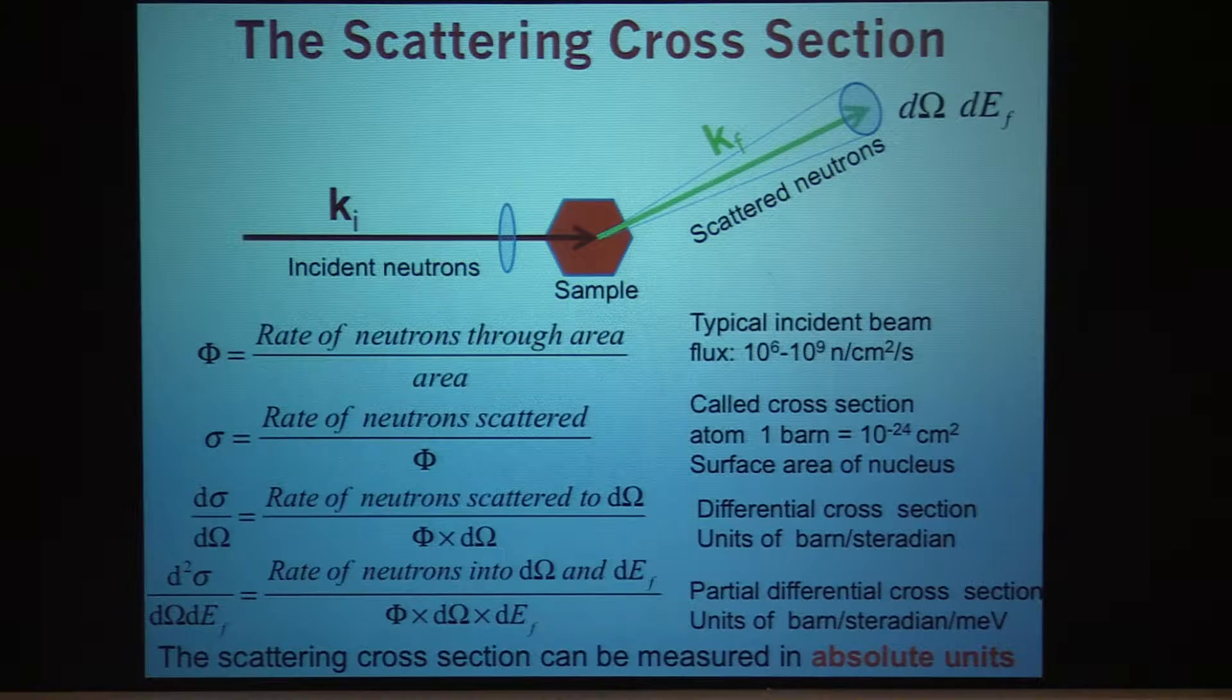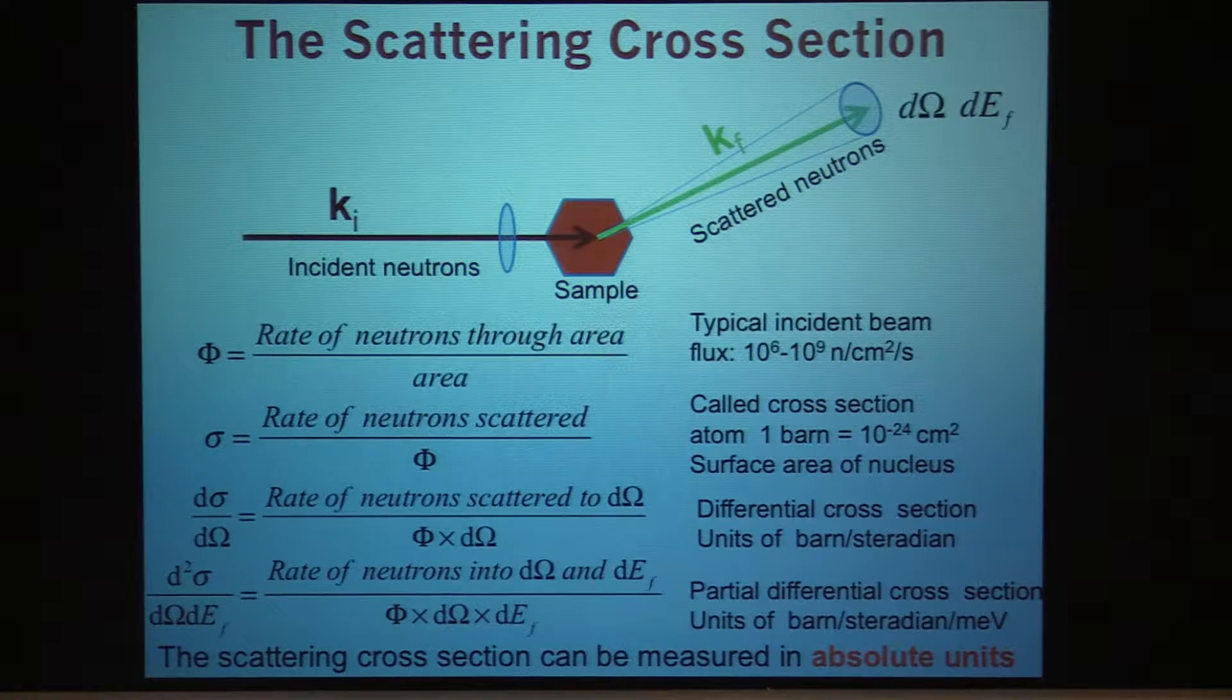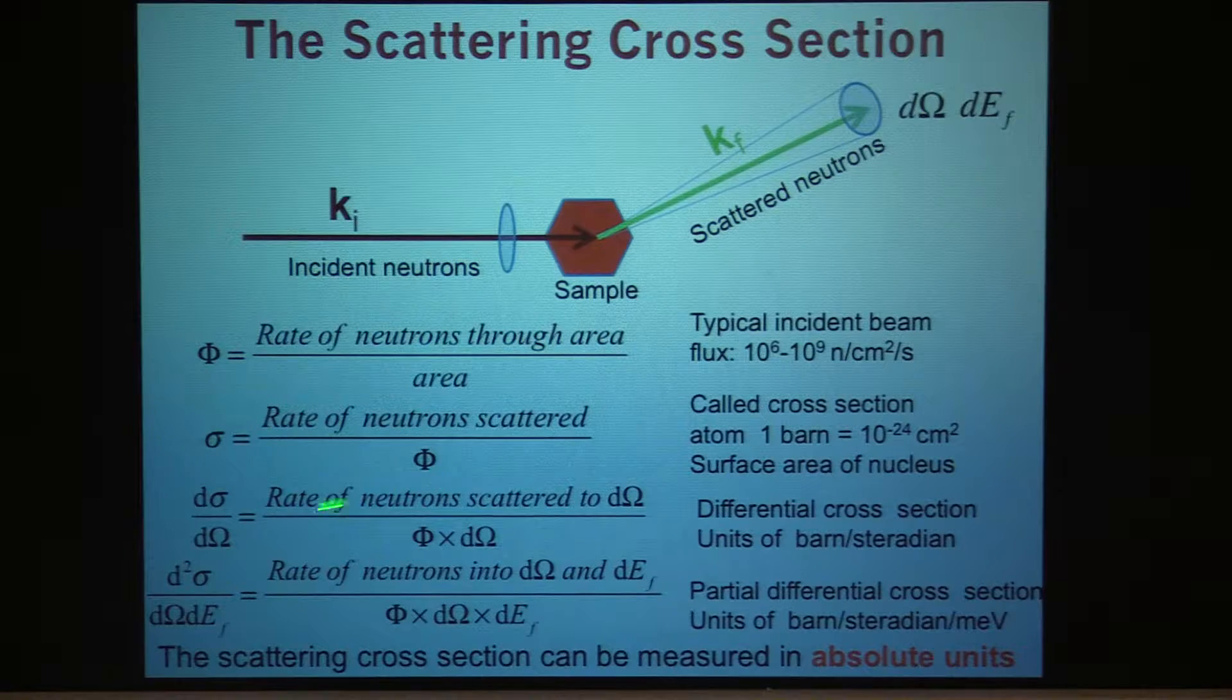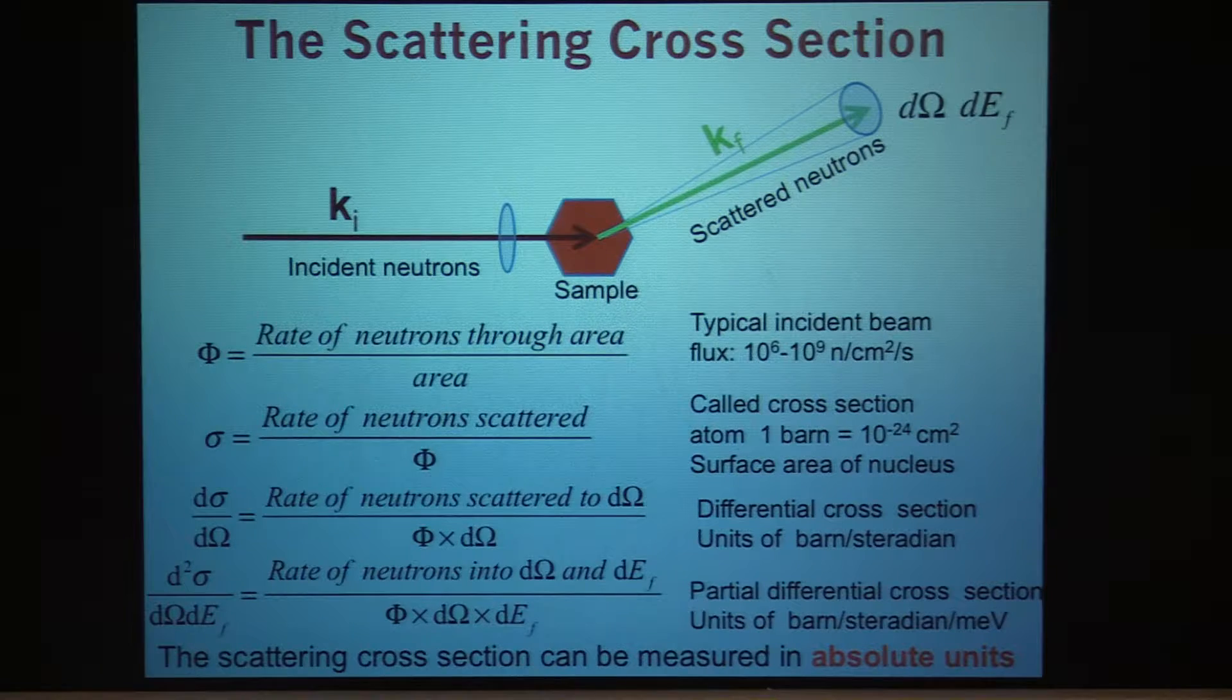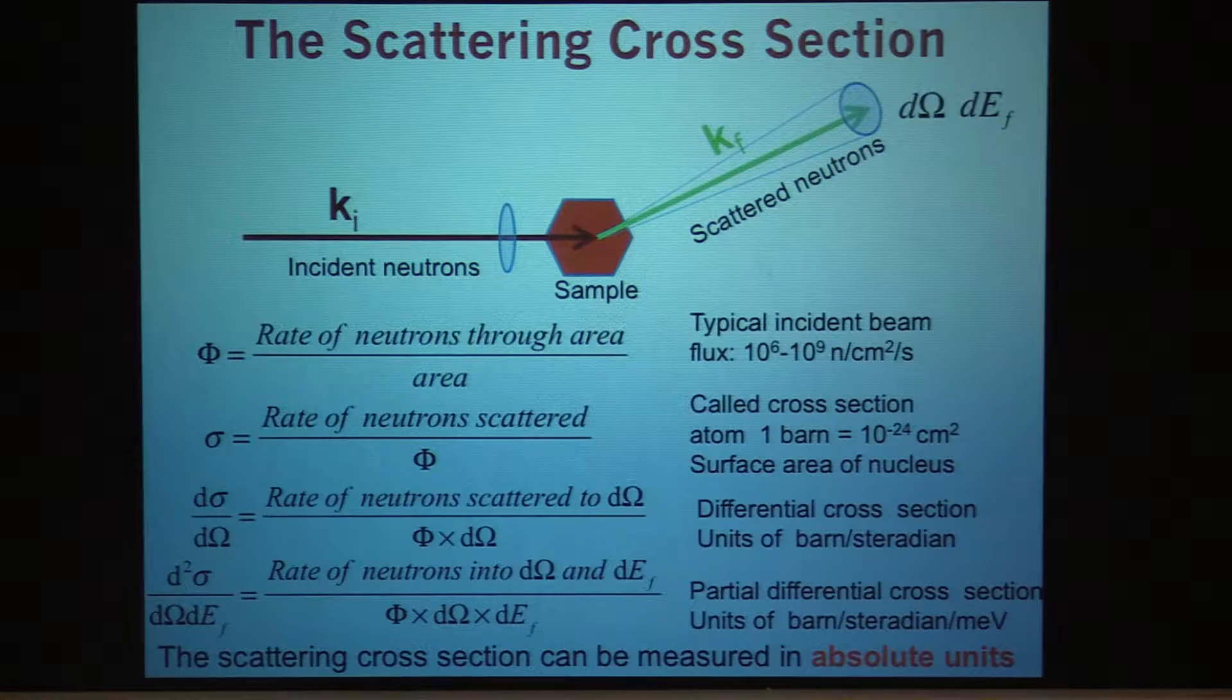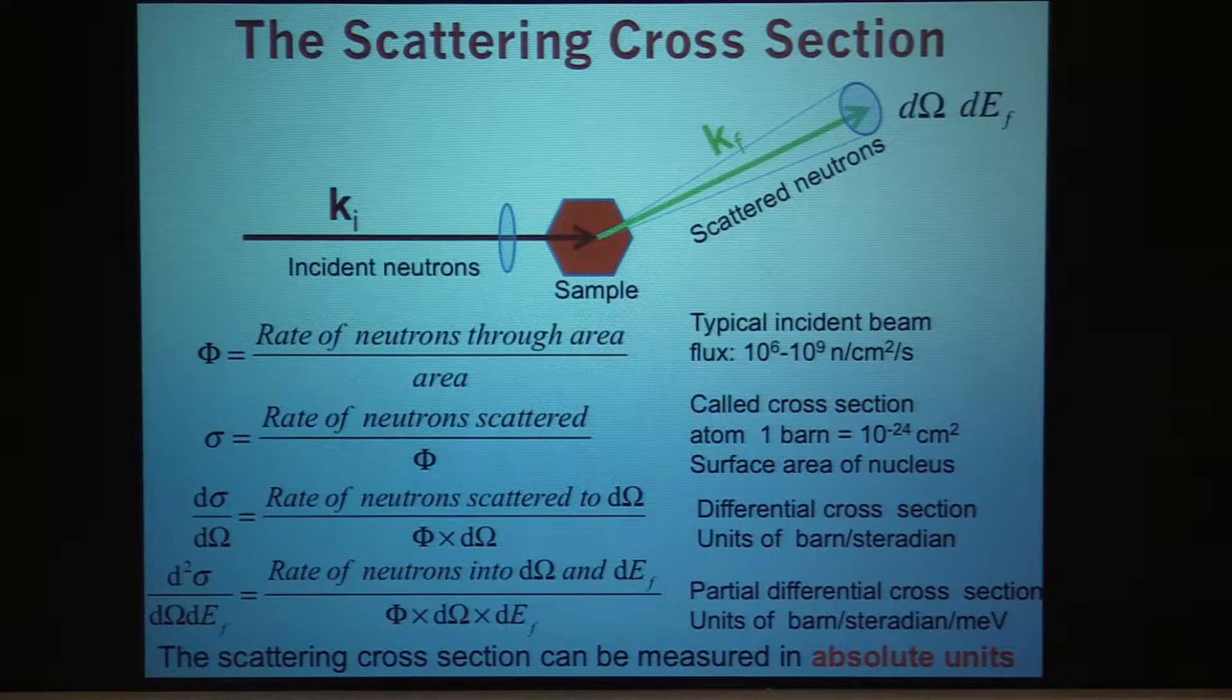Any questions thus far? [Student: Why is the total scattering cross section an area? It seems like it should be unitless or like a number of neutrons scattered per number?] Well, it's because I want to measure it in terms of the flux of the incident beam. And the flux has an area in it because it is neutrons per area unit that will come in there. So because of that it ends up being area.